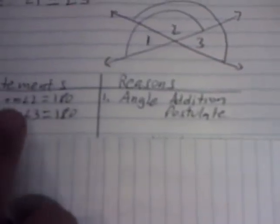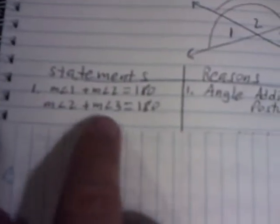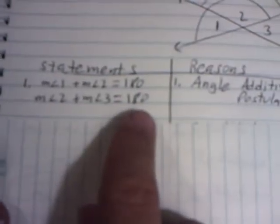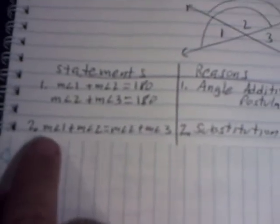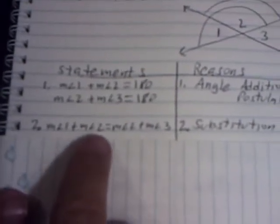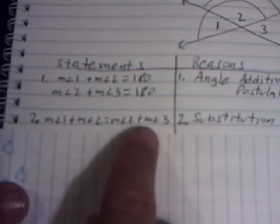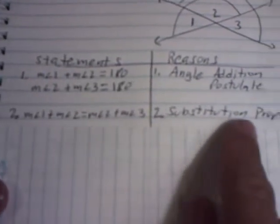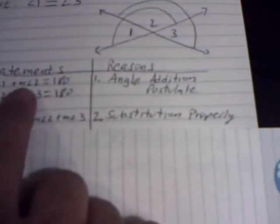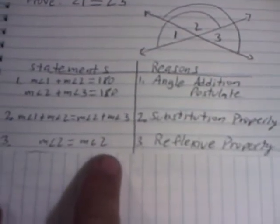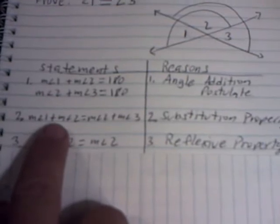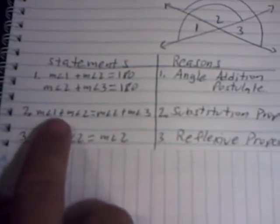Because angle one and two equals 180, and angle two and three also equals 180, we can say those two expressions are equal to each other. So the next step: angles one and two equals angles two and three. That's the substitution property, because we substituted these two facts into one. Notice that they both share angle two on the left side and the right side of the equation.